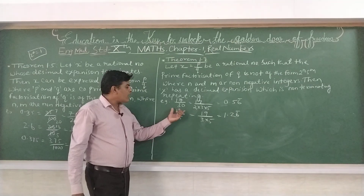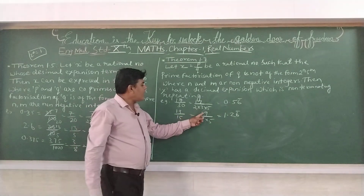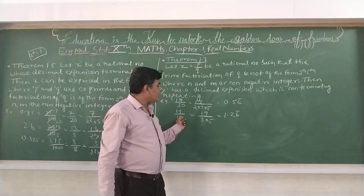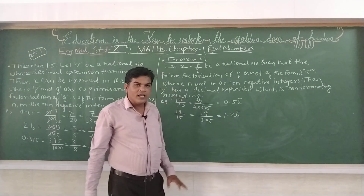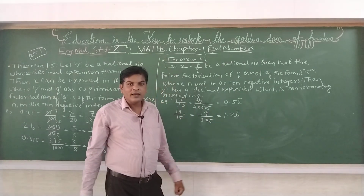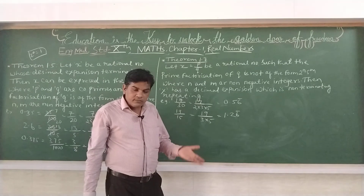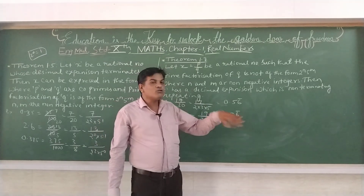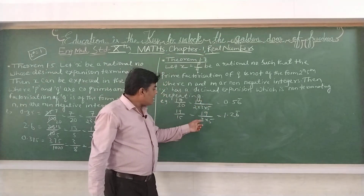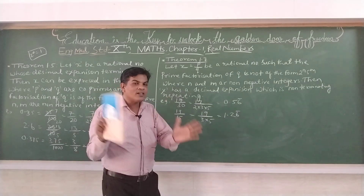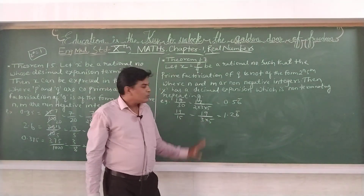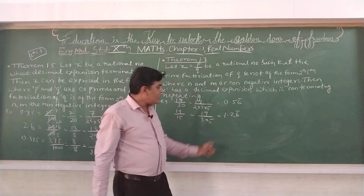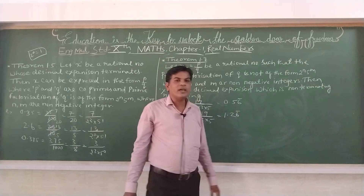Next, 19 upon 15. So 19 upon 15 is equal to 19 divided by 3 into 5 — yaani 15 ka prime factorization 3 into 5 hai. Yahan 5 ka power to banega — 5^1. Aur 2 ka bhi 2^0 likh sakte hain. Lekin yahan jo 3 diya hai, yah ek extra number aa gaya jiska power nahi banega. To that means yah number non-terminating aayega: 1.266... mein 6 recurring hoga.